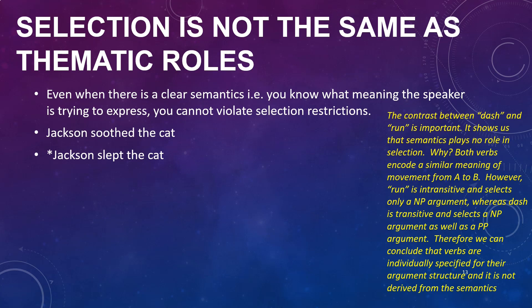We do understand what 'Jackson slept the cat' could mean — perhaps Jackson was petting the cat and it drifted off to sleep — so the sentence has a possible meaning, but it is not a good English sentence. This tells us that meaning alone is not enough to make a sentence grammatical, and that meaning and selection restrictions are not the same thing. Now consider: 'Jackson donated the money' is grammatical, but 'Jackson gave the money' seems a little odd — I've put a question mark to show that. Both sentences have roughly the same semantics, with Jackson as agent providing money to some other entity.